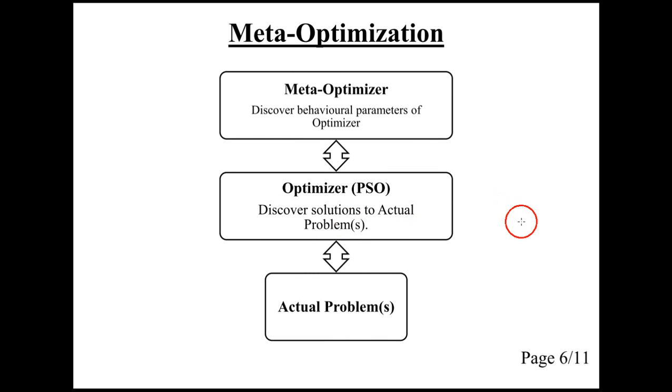So the idea of meta-optimization is that we have the optimizer, in this case PSO. We have some problems, which may be benchmark problems or real-world problems. Then we have the meta-optimizer, which could be a PSO as well, but we will use another optimizer because it's more efficient.